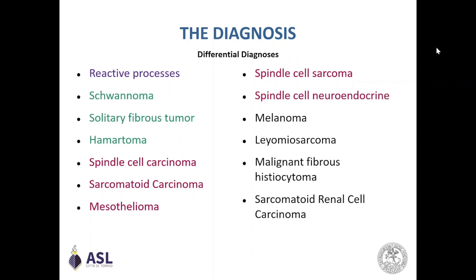Here we can see the various entities that make up the differential diagnosis. Reactive processes include granulomas and inflammatory pseudotumors. Primary benign lesions to consider are schwannomas, solitary fibrous tumors, and hematomas. Primary malignant spindle cell lesions include squamous cell carcinoma with spindle cell features, sarcomatoid carcinoma, spindle cell sarcoma, or a neuroendocrine neoplasm with spindle cell features. Metastatic lesions to consider are melanoma, leiomyosarcoma, and malignant fibrous histiocytomas.